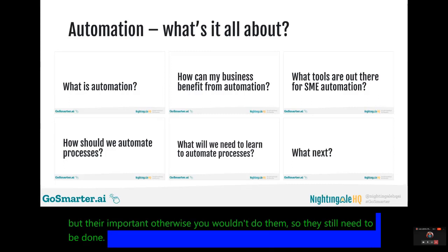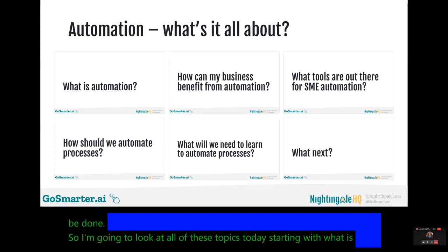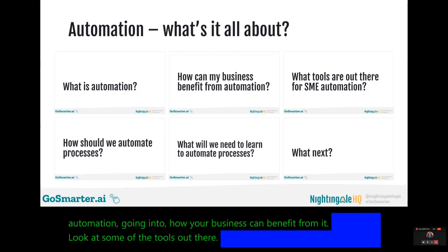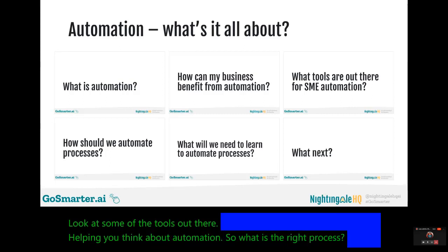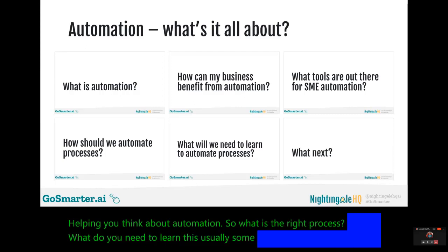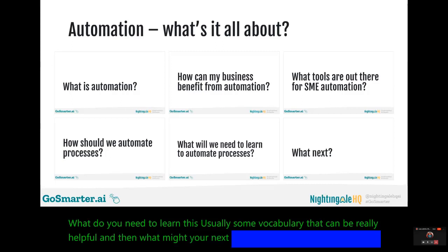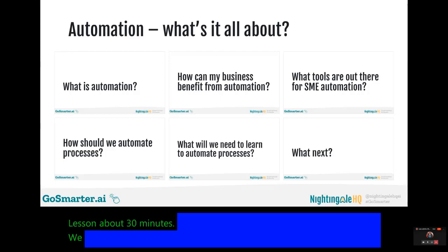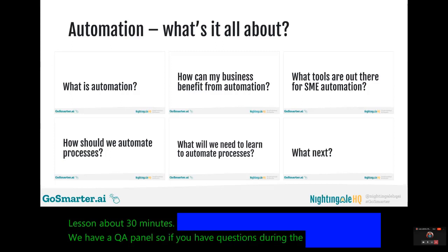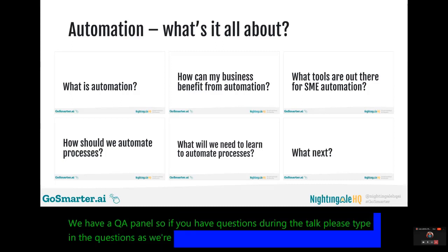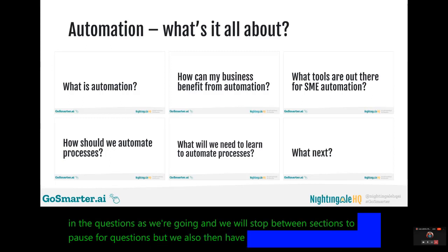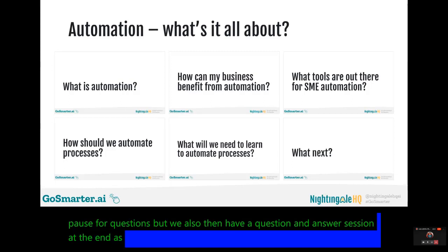We're going to look at all of these topics today, starting with what is automation, going into how your business can benefit from it, look at some of the tools out there, helping you think about automation — what is the right process, what do you need to learn, there's usually some vocabulary that can be really helpful — and then what might your next steps be. We're going to do this in about 30 minutes. We have a Q&A panel, so if you have questions during the talk please type them in and we will stop between sections to pause for questions, and also have a question and answer session at the end.